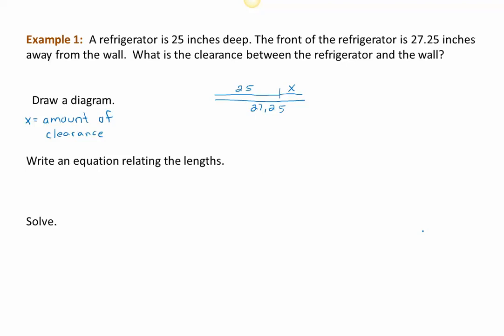As we write an equation to relate the lengths, we see that the two small pieces combined give us the larger one. So we know that 25 plus X equals 27.25. To undo addition, we use subtraction. We'll subtract 25 from both sides of this equation. The left side becomes zero—25 minus 25 goes away—so all we're left with is X. On the right side, we do the subtraction, and the result is 2.25, but we're not quite done yet.